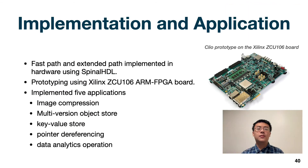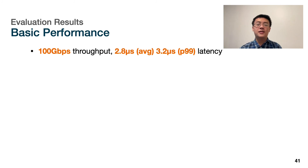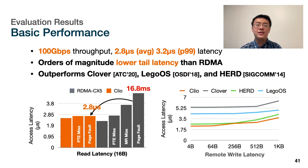We implemented the hardware part of Clio in SpinalHDL and prototyped Clio boards using a Xilinx ARM FPGA board. We built and evaluated five real-world disaggregated memory applications with Clio. For basic performance, we achieve 100 gigabits per second network line rate with 2.8 microsecond average latency and 3.2 microsecond tail latency for read and write operations. Clio keeps bounded latency for all data access requests even when page faults happen. Comparing write latency for Clio and RDMA across different cases — including page table entry cache miss and page fault — Clio's tail latency when a page fault happens is thousands of times smaller than RDMA. Clio's remote memory read and write latency also outperforms other server-based memory disaggregation systems.